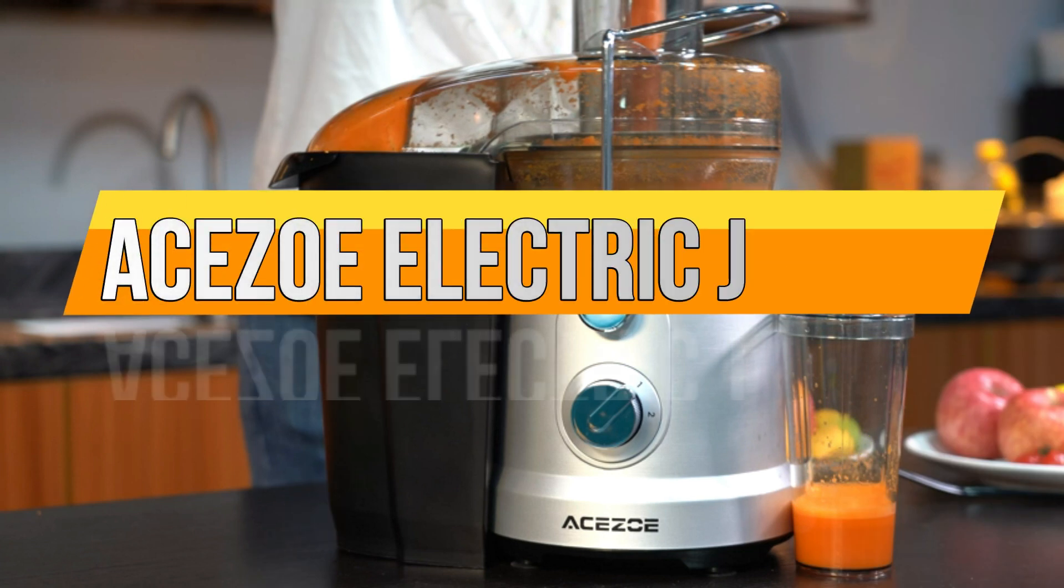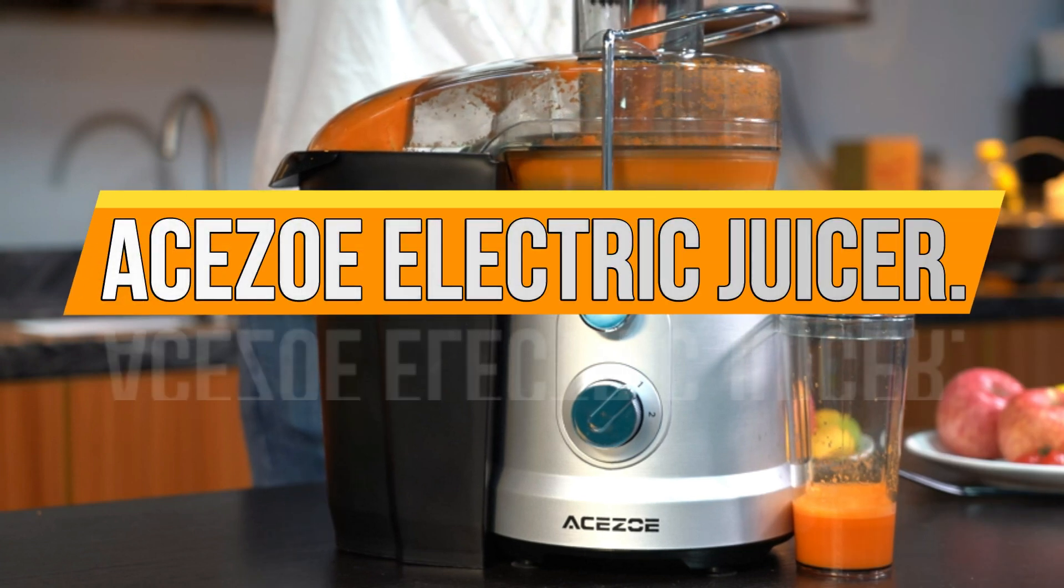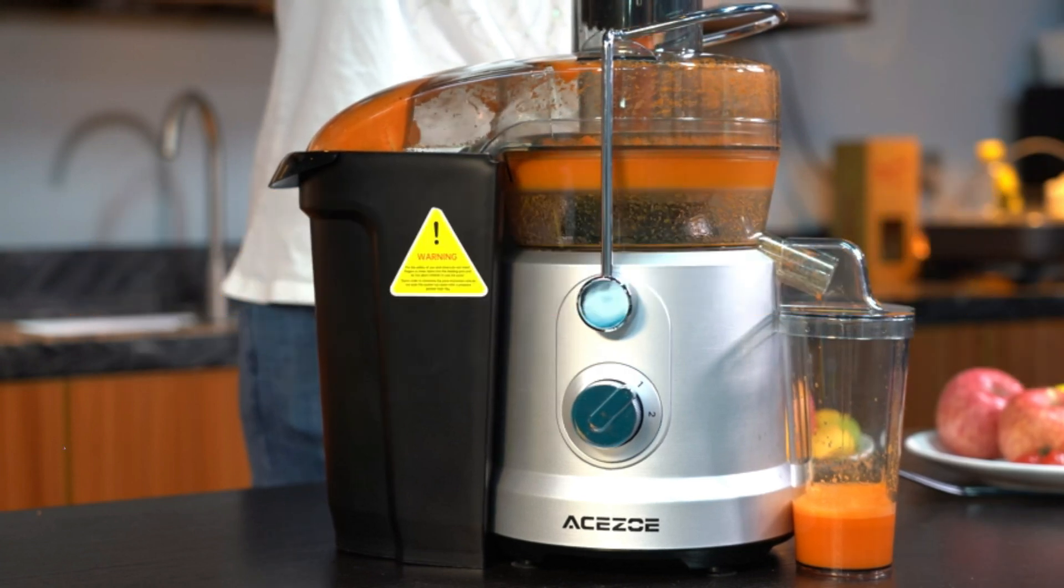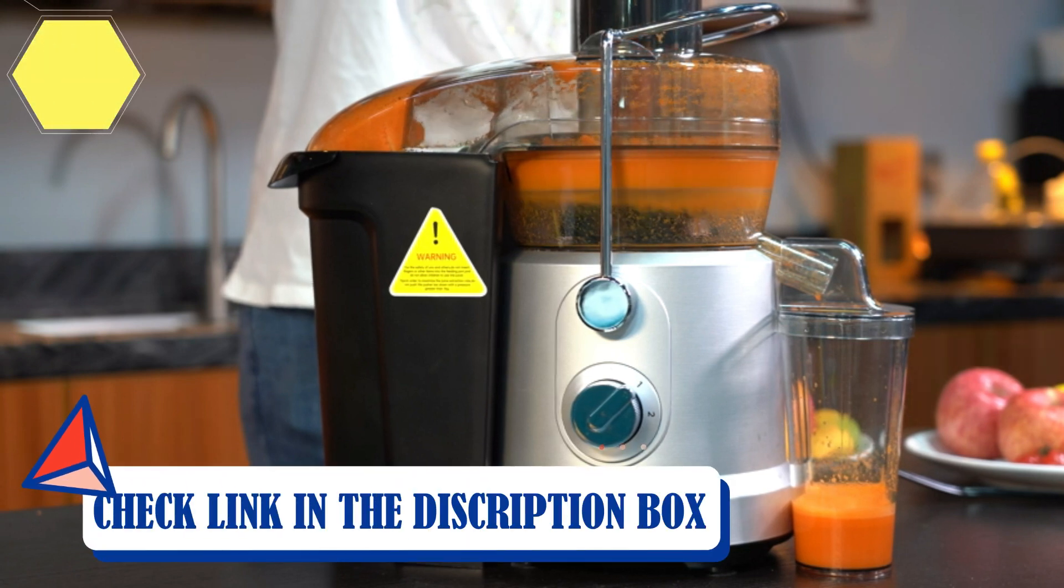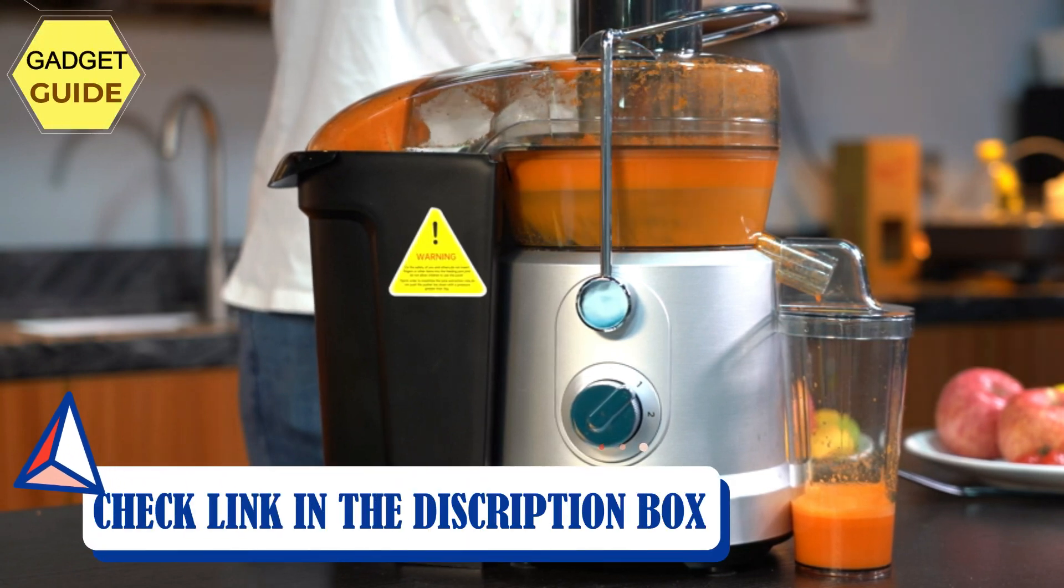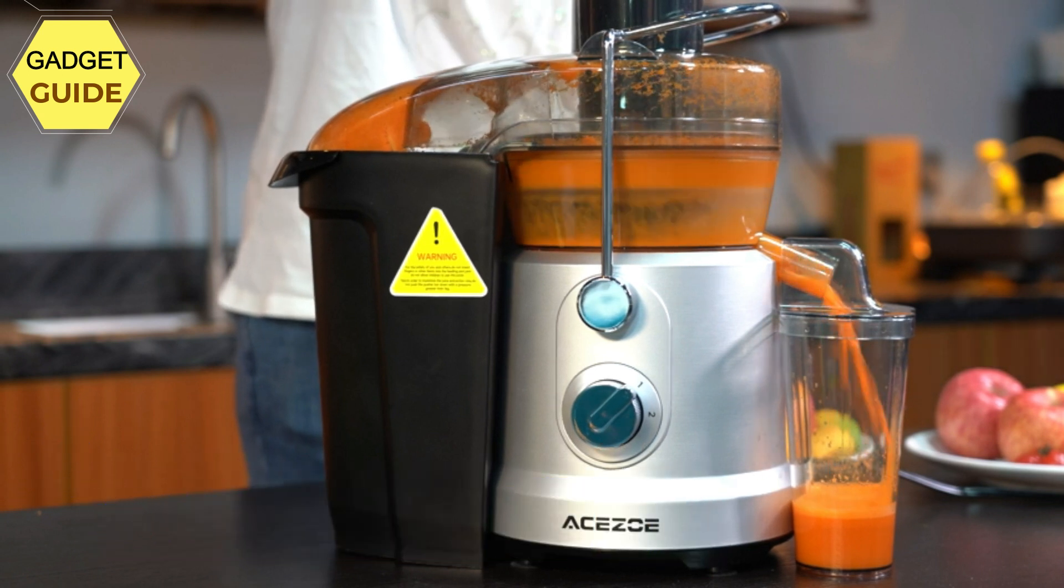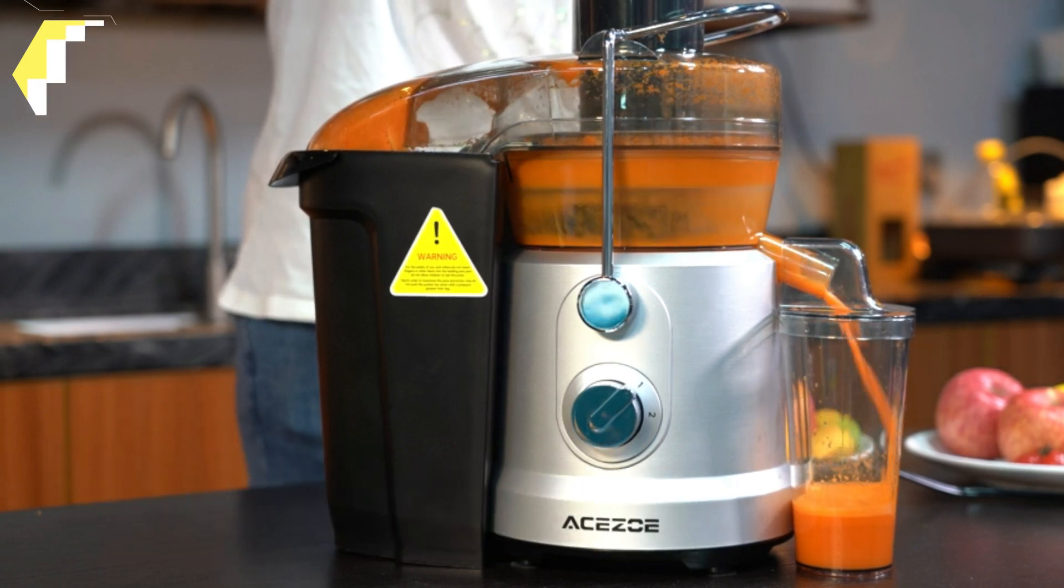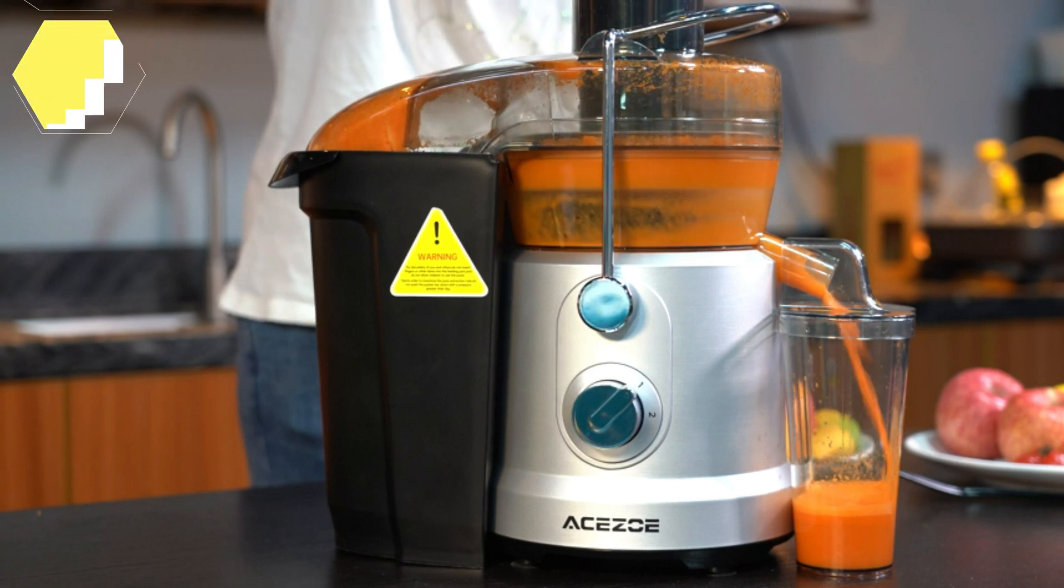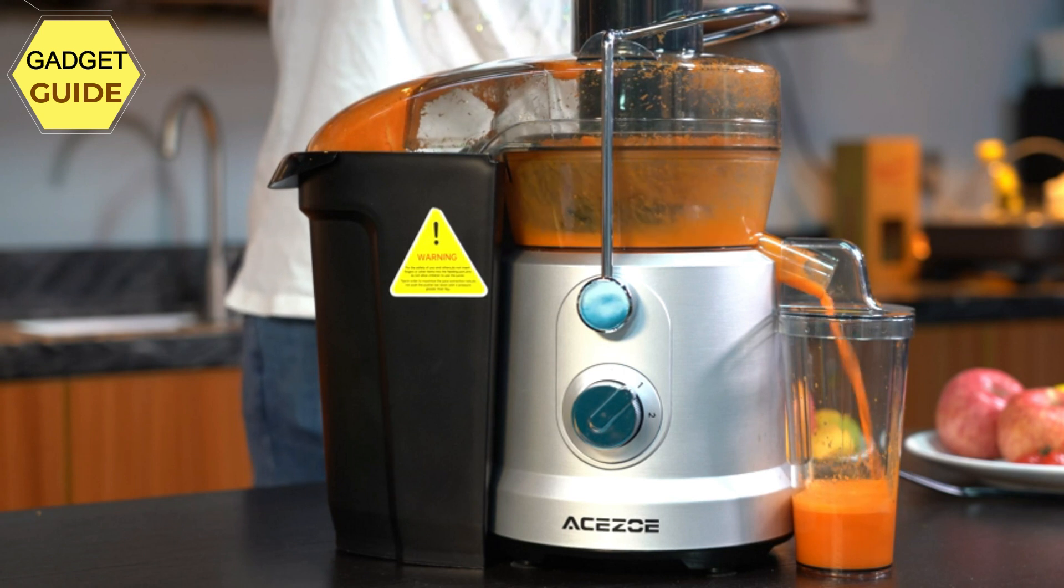Number 1: Ace Zoe Electric Juicer. High juice yield with dry pulp - Ace Zoe Power Juicer Extractor equipped with a strong motor at 1300 watts, extracting a big cup of juice in just seconds. The juice yield is up to 85%, which is 25% higher than other centrifugal juicers and juice makers. After juicing, you can feel the pulp is dry enough with less waste.